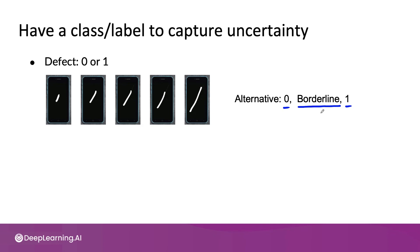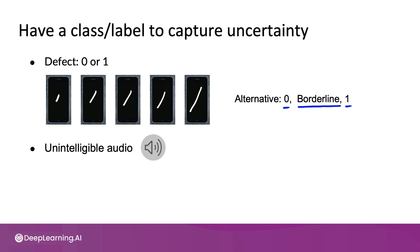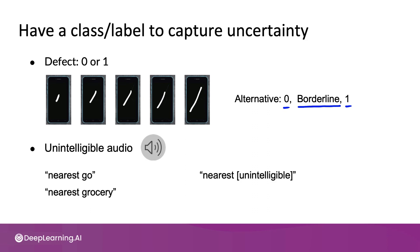Let me use a speech illustration to illustrate this further. Given this audio clip, I really can't tell what they said. And if you were to force everyone to transcribe it, some labelers will transcribe 'nearly go,' some will say 'nearest grocery.' It's very difficult to get consistency because the audio clip is genuinely ambiguous. To improve labeling consistency, it may be better to create a new tag — the 'unintelligible' tag — and just ask everyone to label this as 'nearest [unintelligible].' This can result in more consistent labels than asking everyone to guess when it really is unintelligible.